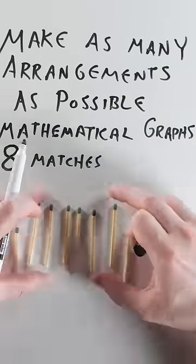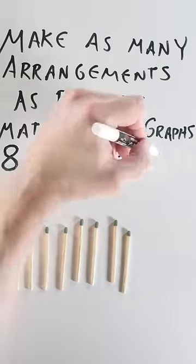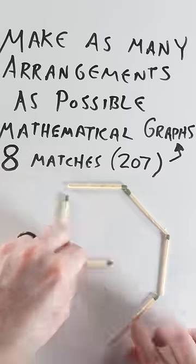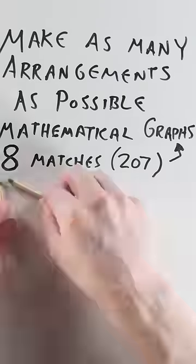By the time you get up to using eight matches there are 207 possible graphs. Stop sign is an easy one. One kind of looks like a dog.